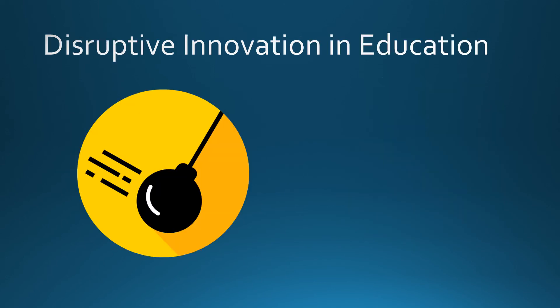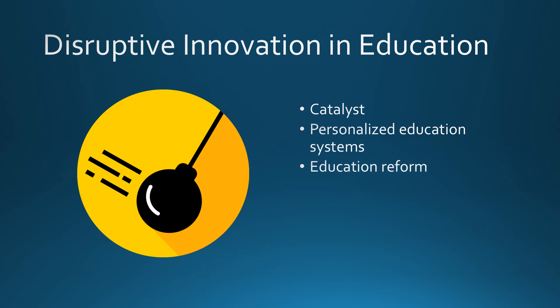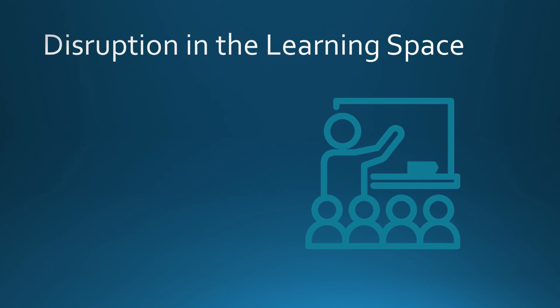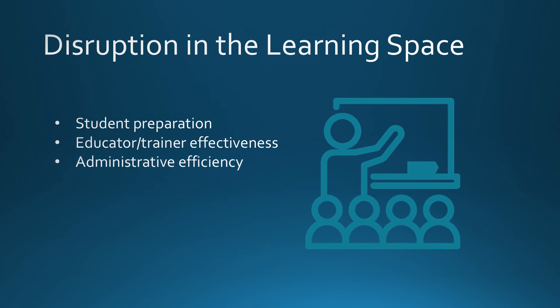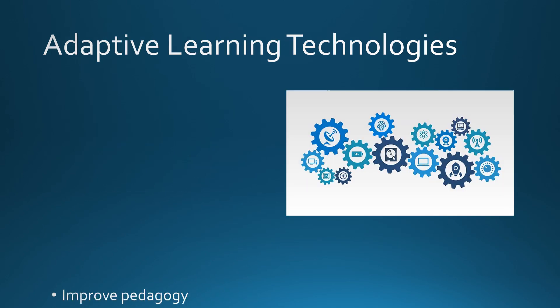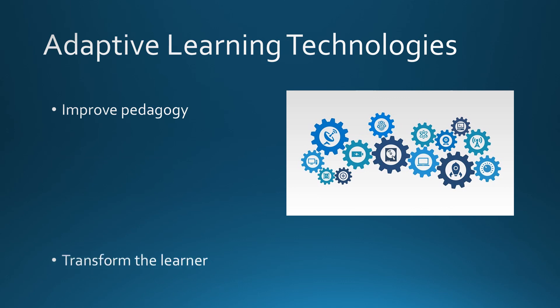Adaptive learning has become a leading contender for the most important disruptor in education of the future. Potentially replacing the traditional classroom model of in-person instruction, it is also the catalyst for bringing about more equitable access to high-quality education, is the mechanism for bringing about a personalized education system, and circumvents the political battles that have historically been at the center stage of education reform. In a personalized education system, adaptive learning has the potential to disrupt the learning space through student preparation, educator-trainer effectiveness, and administrative efficiencies, while transforming the learner from a passive receiver of knowledge to a collaborator in the educational process.